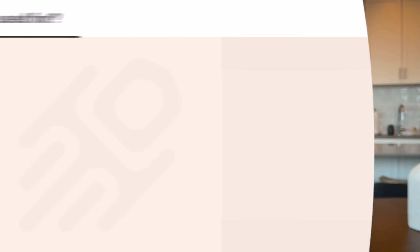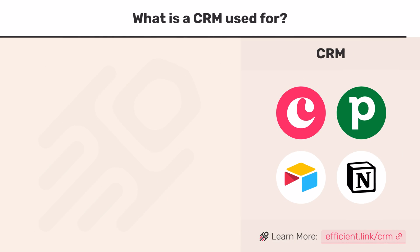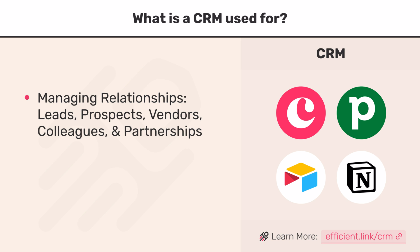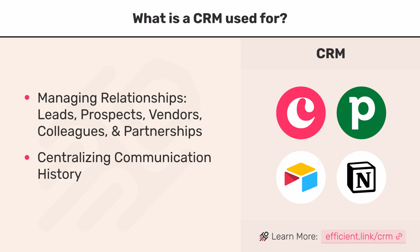Before we get super deep into it, let's cover what a CRM should be used for. A CRM is used to manage your business relationships. This can be anything from your leads to your prospects to your vendors to your colleagues to partnerships. And a CRM should be the central hub of communication for your business, meaning that it should ingest all of your team's communication with all the different people that your business is interacting with in one central place.